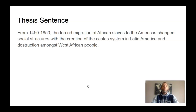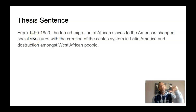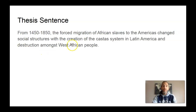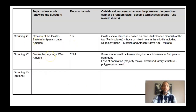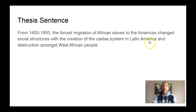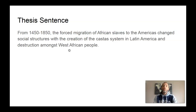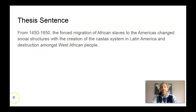Here is my thesis: From 1450 to 1850 — there are the dates — the forced migration of African slaves to the Americas changed social structures — straight from the question. Then here are my two groups: the creation of the caste system in Latin America and the destruction amongst West African people. That's my thesis. It doesn't mean that what you wrote was wrong, but I just want to walk through this as we get into more of these, and it's really hard to do face-to-face communication. So that's what I got. You have any questions, write it down and let me know. I'm out.